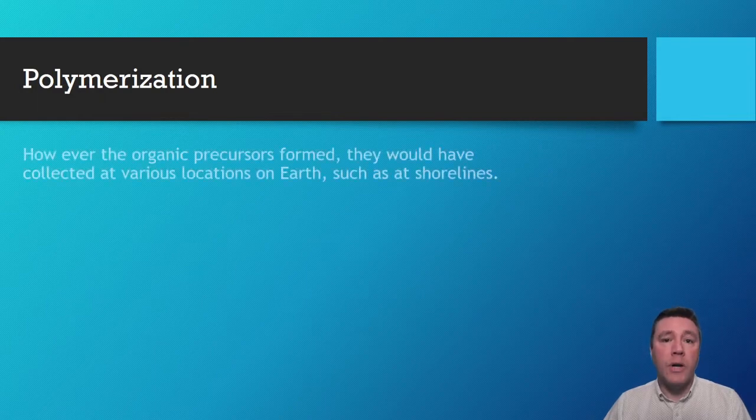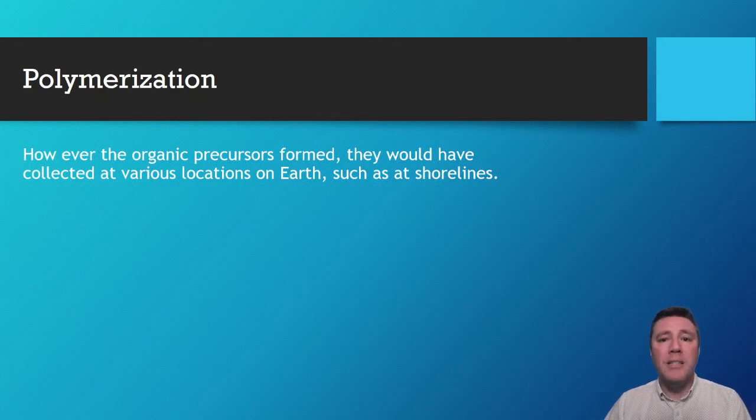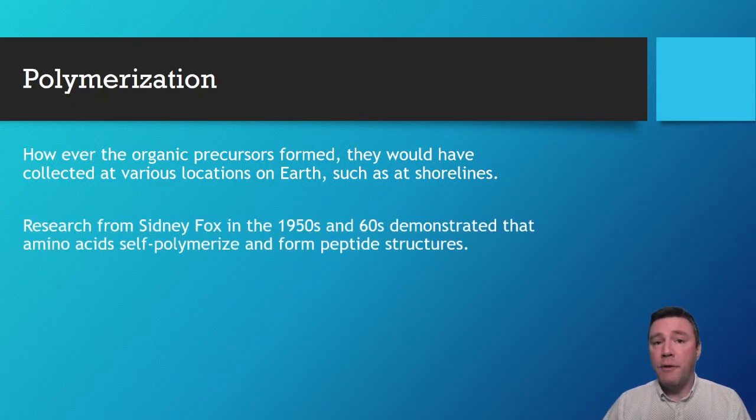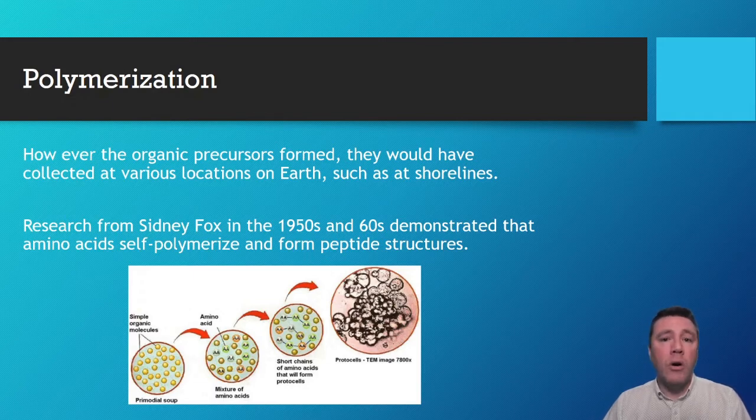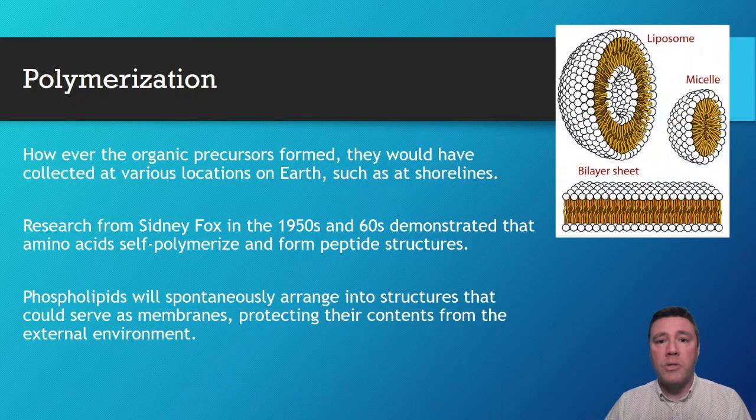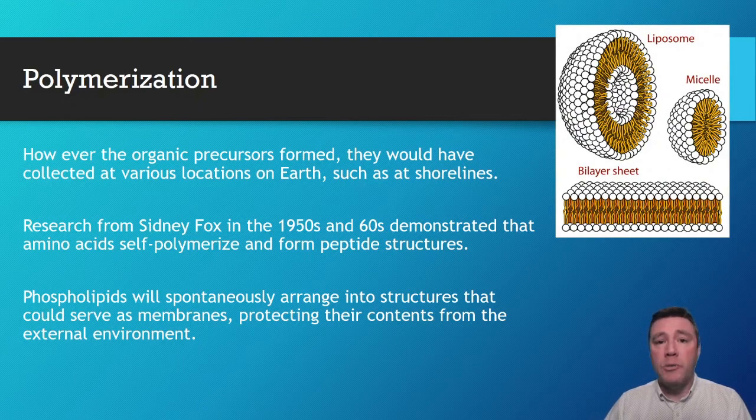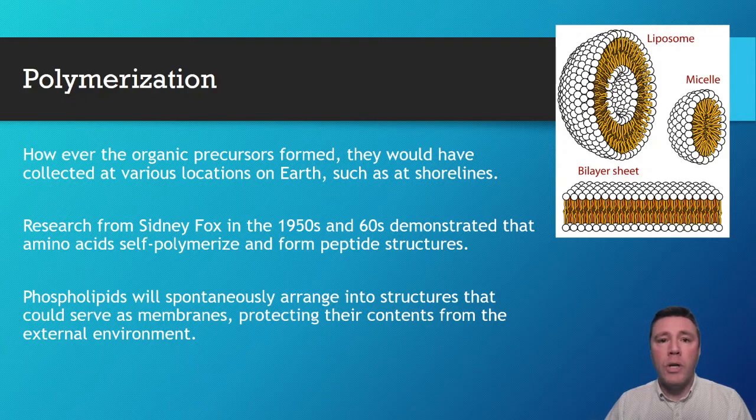However it was that those organic molecules formed, both hypotheses suggest that those organic molecules would have naturally collected in certain places on Earth, like in deep-sea vents or at shorelines. Research from a scientist named Sidney Fox in the 1950s and 60s demonstrated that those organic molecules would self-assemble and self-polymerize to form polypeptide structures. We also know that phospholipids will spontaneously arrange into structures similar to a cell membrane. This would have provided for the establishment of an internal environment relative to the outside. That internal environment could have served as a protection for some of those early organic molecules.